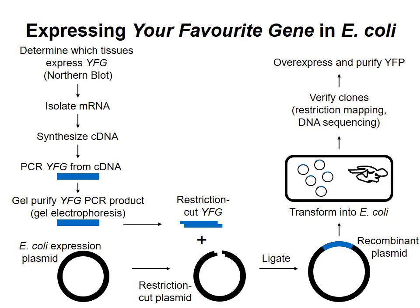Rather than purify it from a natural source, in which the protein might be present in small quantities, it's usually more convenient to engineer a microorganism to make large quantities of the protein. The bacterium Escherichia coli and the yeast Saccharomyces cerevisiae, which are easy and inexpensive to grow, are commonly used for this purpose. This diagram outlines the steps you'd need to take to transfer your human gene of interest, which I'll call your favorite gene, into E. coli. I'll describe the basics of each step along the way, starting with the first: determining which tissues in the source organism express your favorite gene.